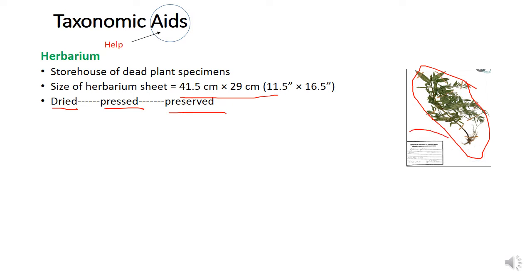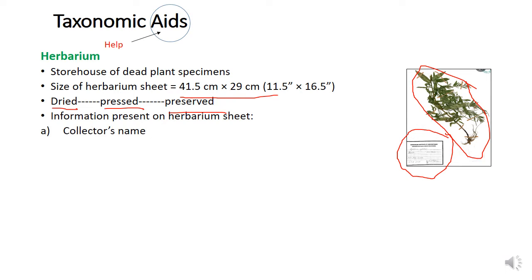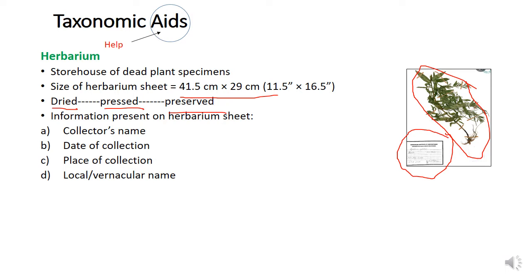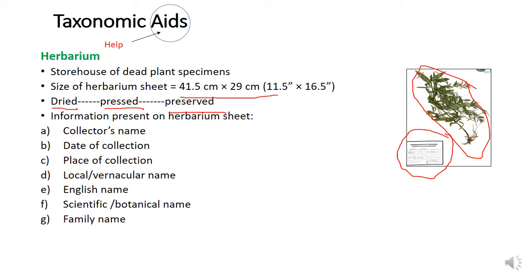On the herbarium sheets you will see some information about the plant — the name of the herbarium, the local location where the plant was collected, the name of the district, and other details. Herbarium serves as a quick referral system in taxonomic studies. Because when you need to gather information about any plant, you just open the herbarium sheet and you get so much information quickly.